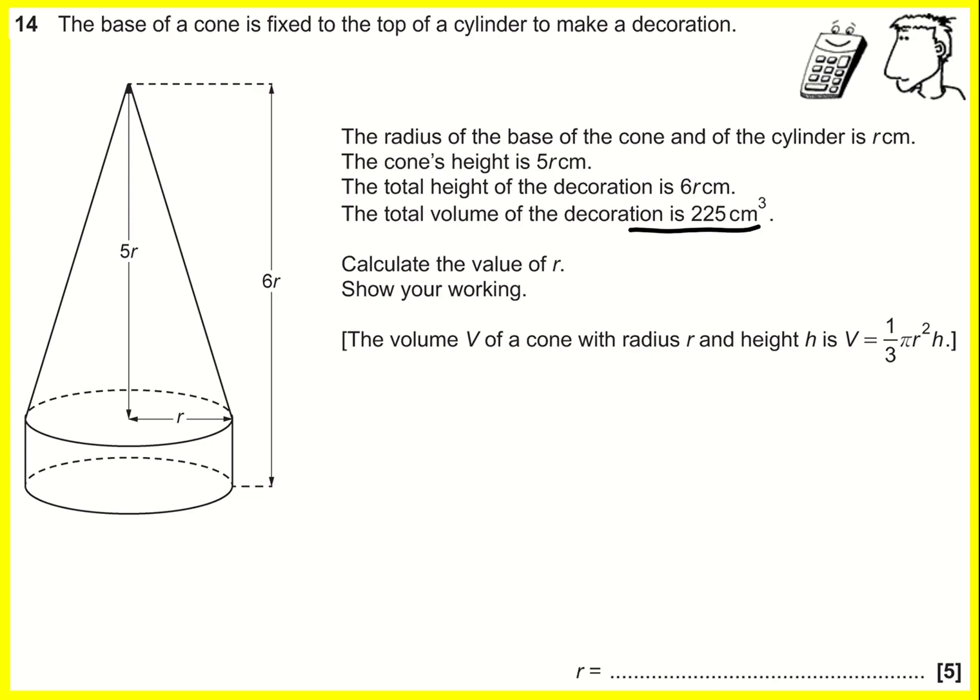Here we're given the total volume of the decoration, so we need to figure out the volume of the cone and the volume of the cylinder, add them up, and set it equal to 225.